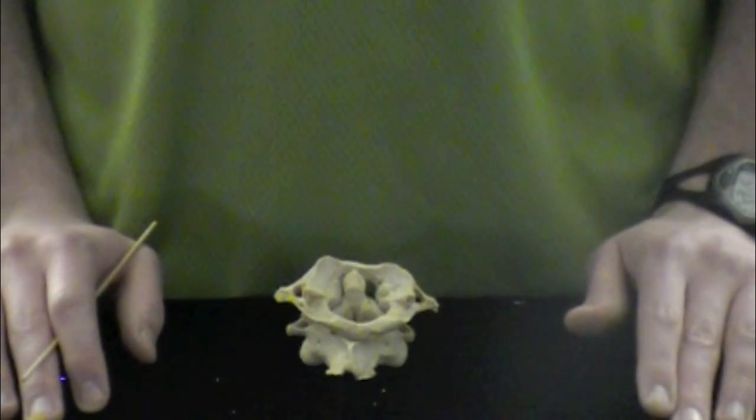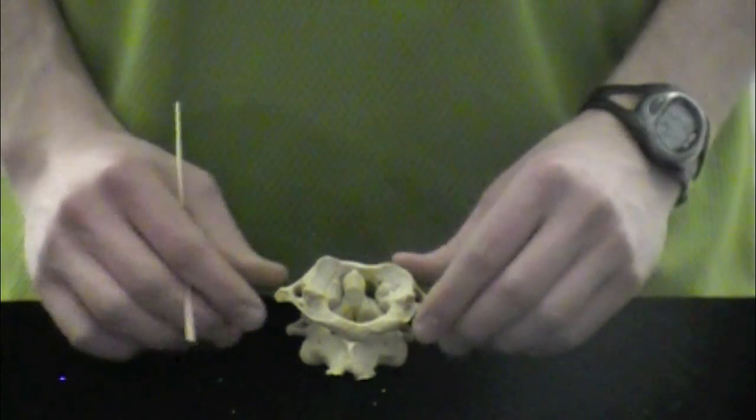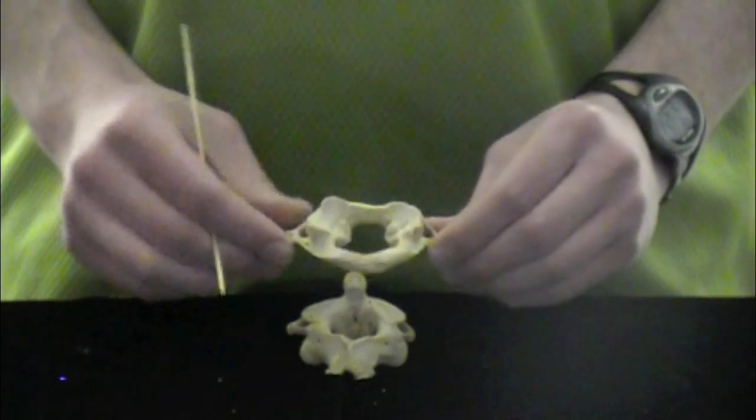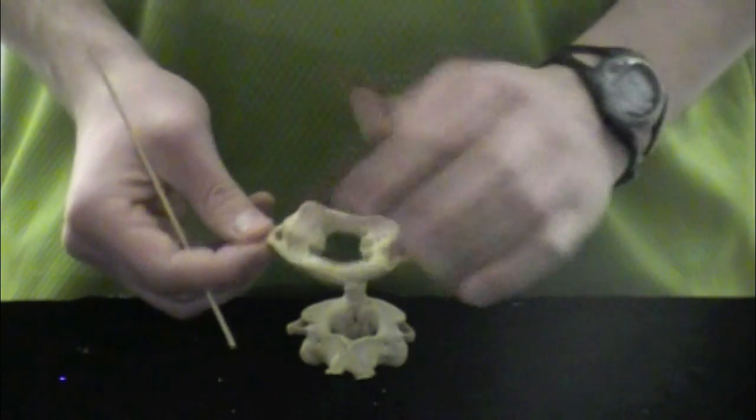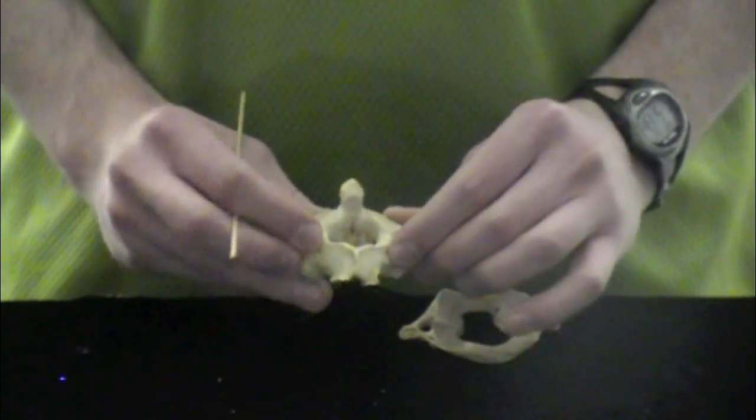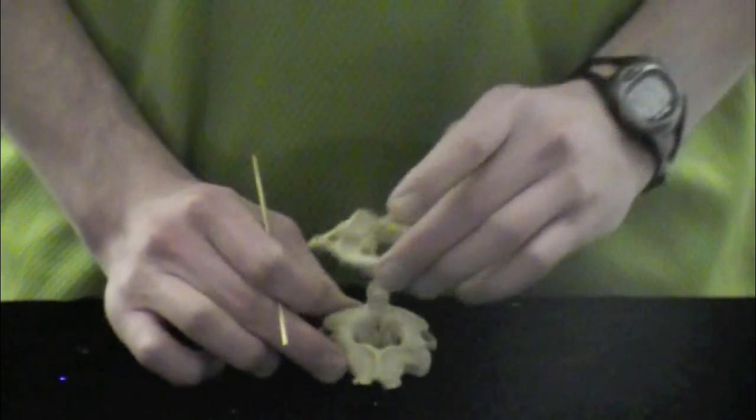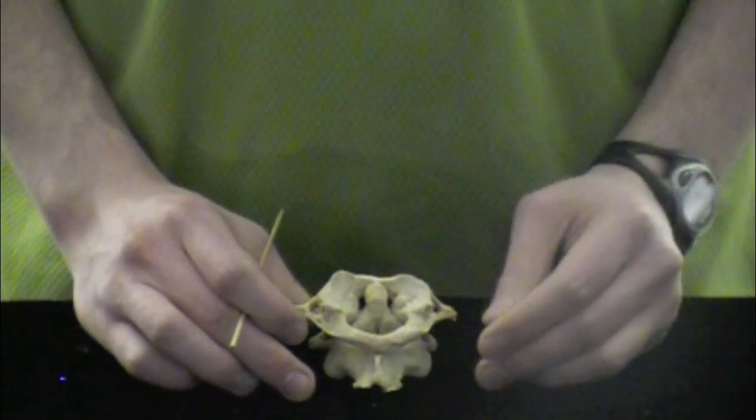Alright, now we're going to go over C1 and C2, they are special. Here we have C1, this is called your atlas, and it's identifiable because of all the surfaces for articulation. And then we have your axis, which is identifiable by this odontoid process. Your atlas and your axis allow your head to swivel and nod.